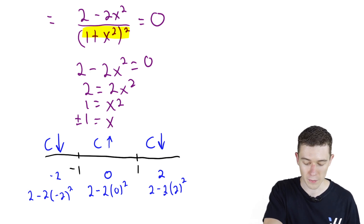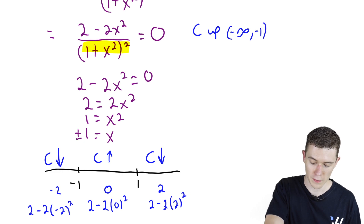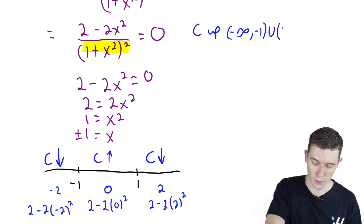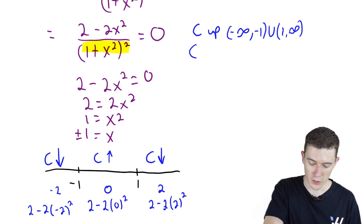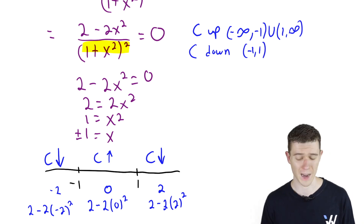Let's summarize what we have. Our function is concave up from negative infinity to negative 1, union 1 to infinity. Our function is concave down in between negative 1 and 1. Those are our intervals of concavity.